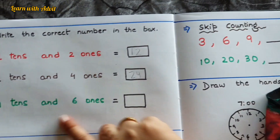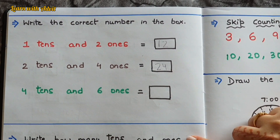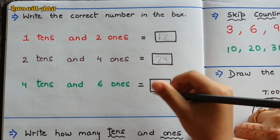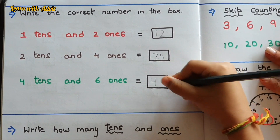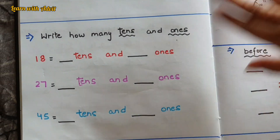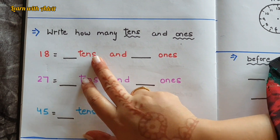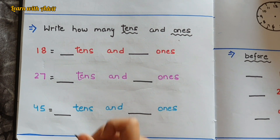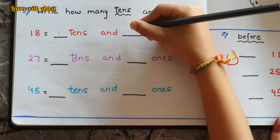Four tens and six ones — four tens is 40 and six ones are 6, so 46 — right! Two tens and seven ones — right. How many tens and ones is 18? Write which number goes in the tens place and which in the ones place. 18 is one ten and eight ones.